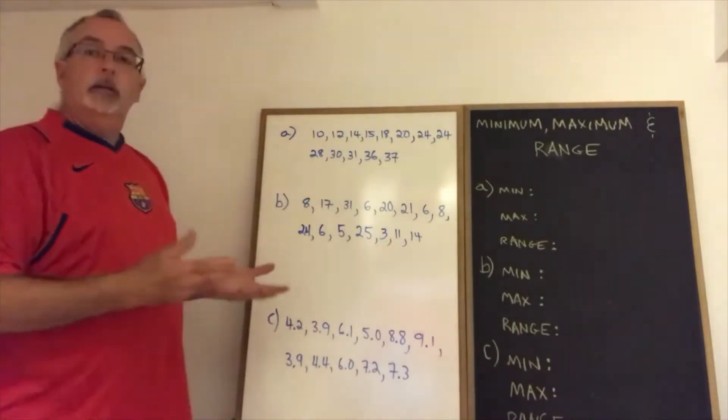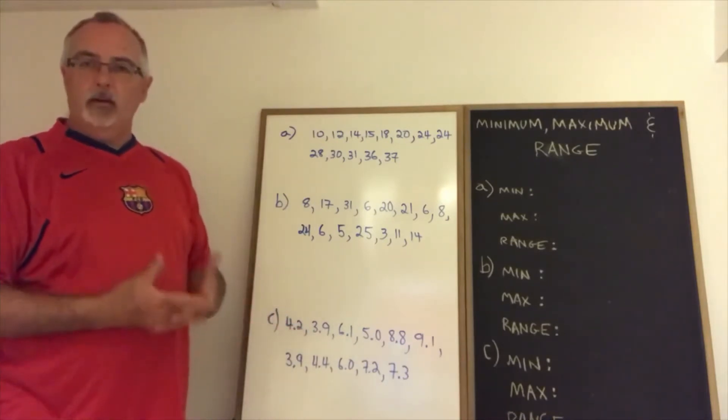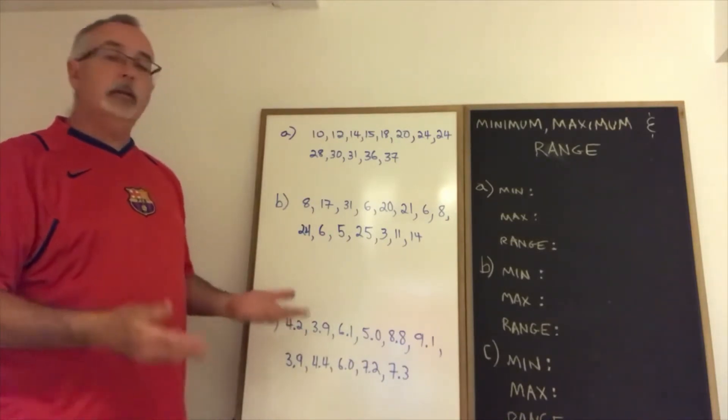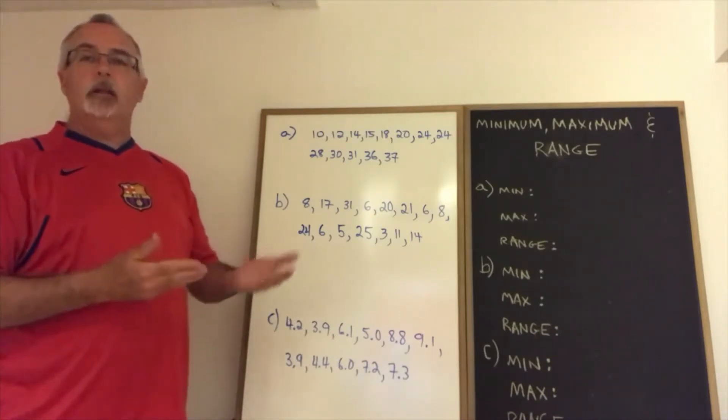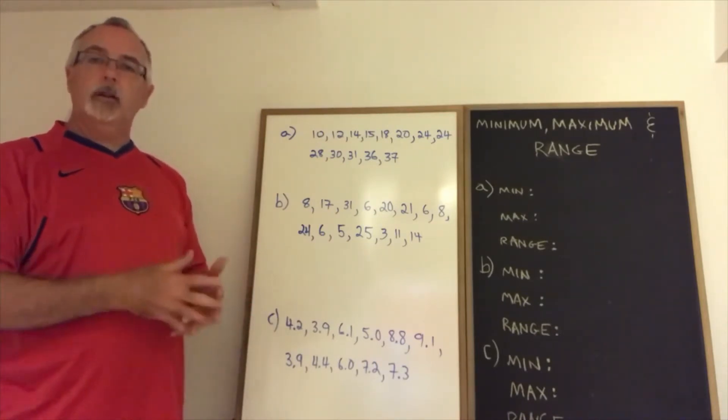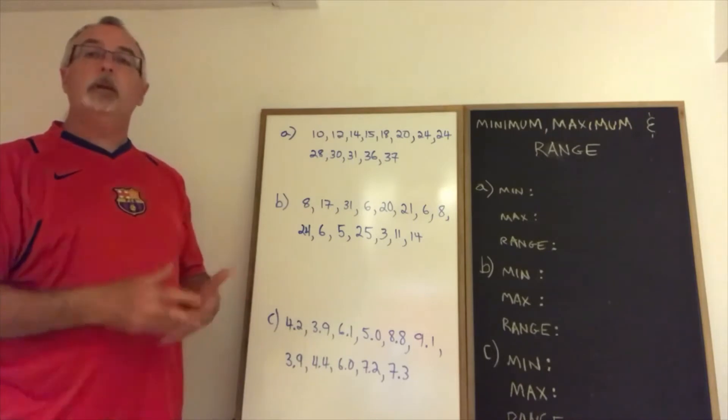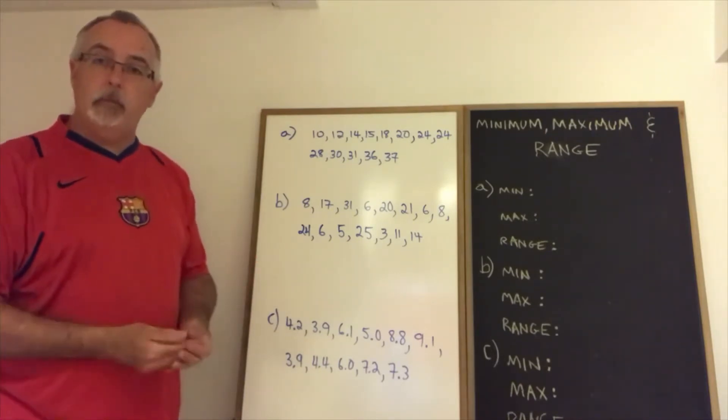Minimum is the smallest number in the set of data that you're looking at. Maximum is the largest number in that set of data, and the range is the difference between the largest and the smallest number. So you get the range by subtracting the minimum from the maximum.